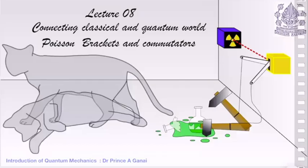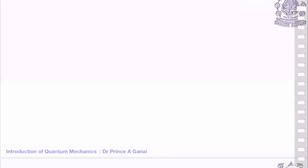Hello dear students. This is our lecture 8 of the series Introduction to Quantum Mechanics, and today our lecture is about connecting classical and quantum worlds. We'll talk about the Poisson brackets and commutators and their properties. Today we will try to get more insight about the connection between the two seemingly different worlds.